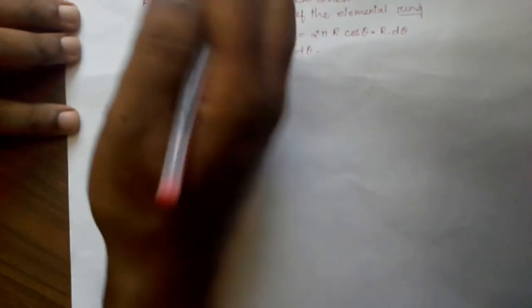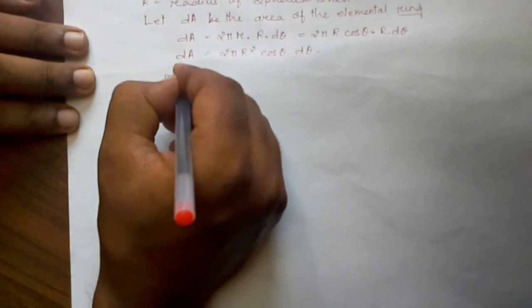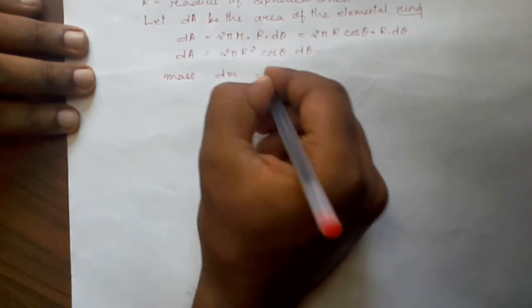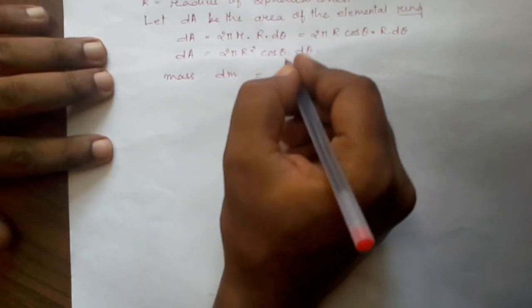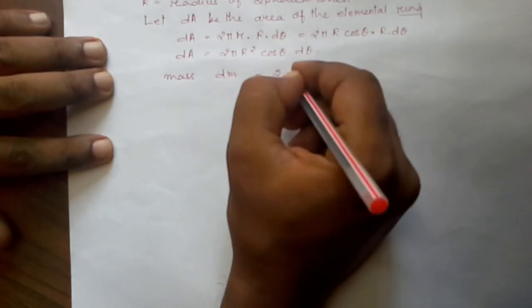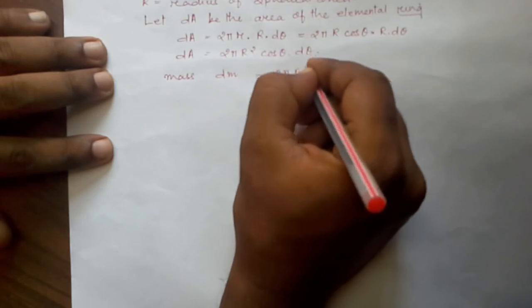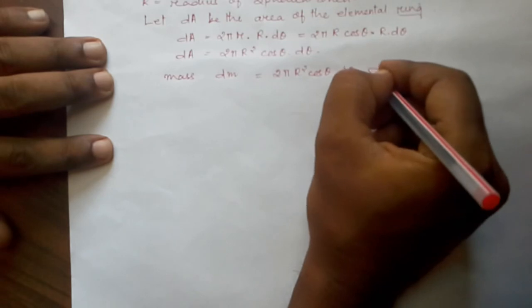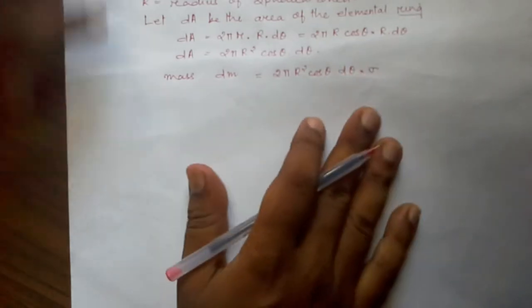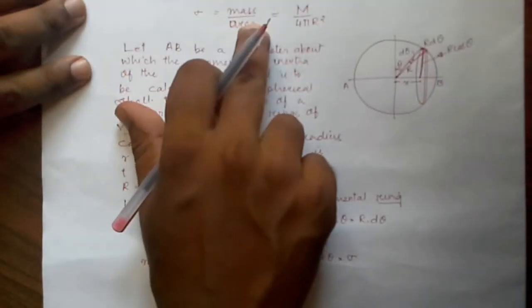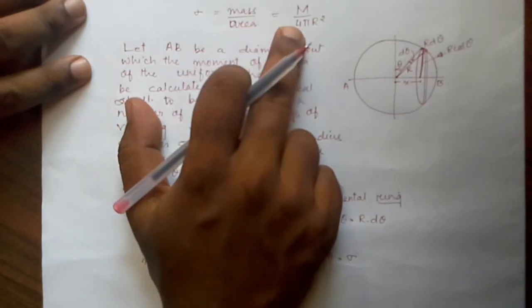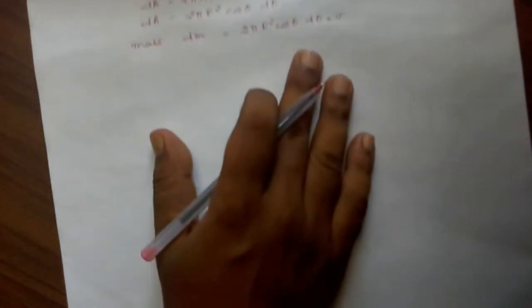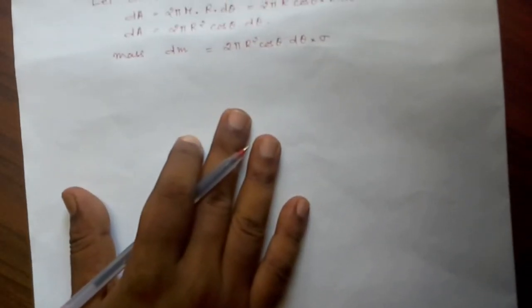Now we can write the mass dm of the elemental ring as dm = 2πr²·cosθ·dθ × σ, where σ is the mass per unit area equal to M divided by 4πr².